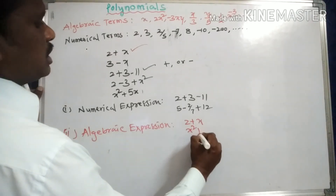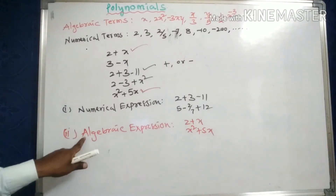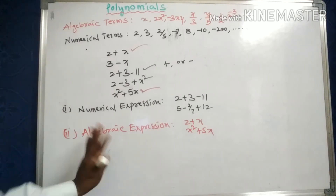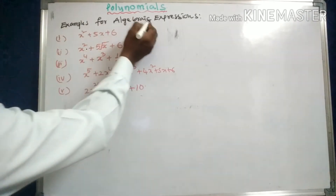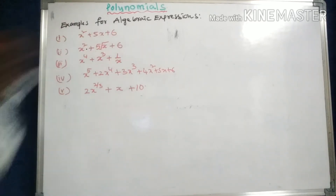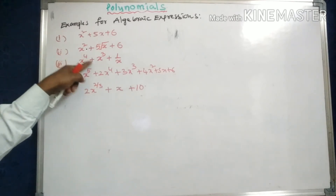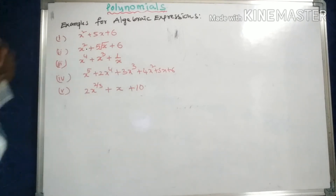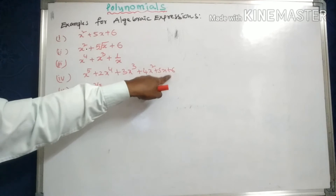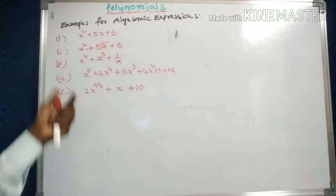Another example: x squared plus 5x — these two terms are algebraic terms. The condition for an algebraic expression is that it must have at least one algebraic term. More examples of algebraic expressions: x squared plus 5x plus 6; x squared plus 5 root x plus 6; x to the power 4 plus x cubed plus 1 by x; x to the power 5 plus 2x to the power 4 plus 3x cubed plus 4x squared plus 5x plus 6; and 2x to the power 2 by 3 plus x plus 10.